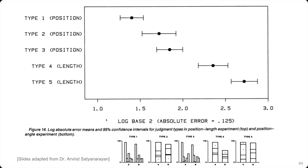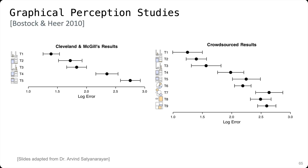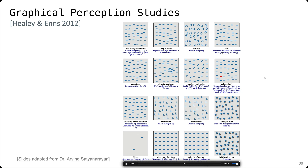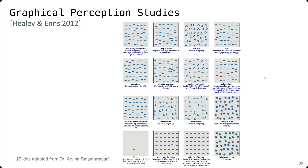They looked at different types of judgments, like proportional judgments, and ranked the different encodings based on error. Position has less error than length, for example, which has more error. Many researchers — probably a hundred studies at this point — have re-evaluated the Cleveland and McGill findings across different data sets, data types, interactivity, etc. One replication study used crowdsourced results, and by and large all of these results hold. Other studies have looked at a wide range of encoding techniques — direction of motion, velocity of motion, color, and so on.